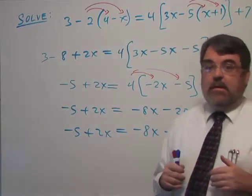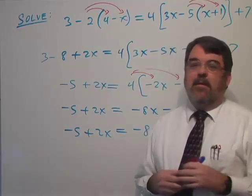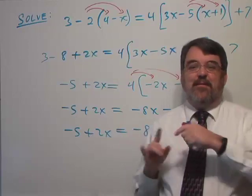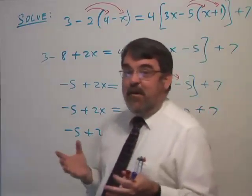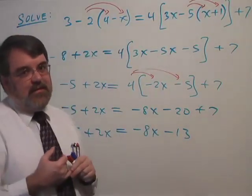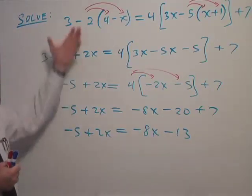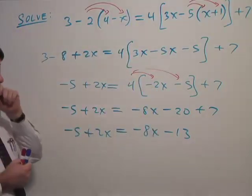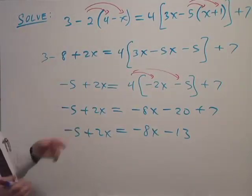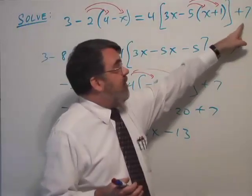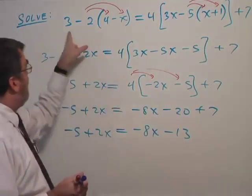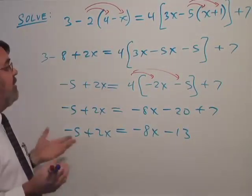And so when you start to learn algebra you learn two types of processes. You learn processes which simplify expressions, and then you learn processes which solve equations. And here we have used the simplification process on each side separately. It would have been okay to, for example, subtract 7 from both sides or subtract 3 from both sides. That would have been okay.